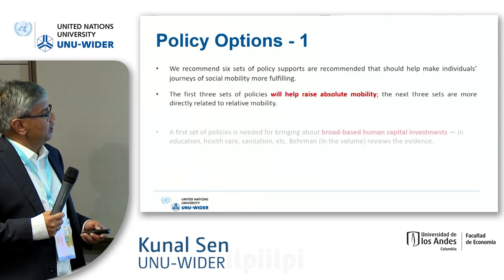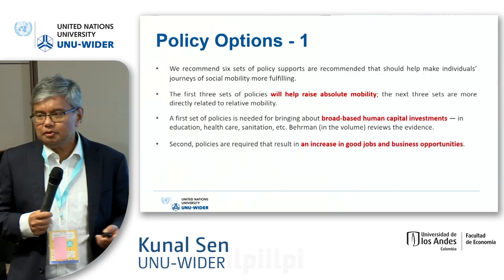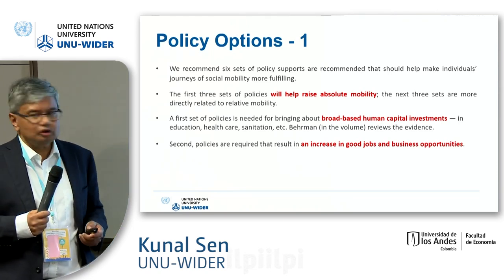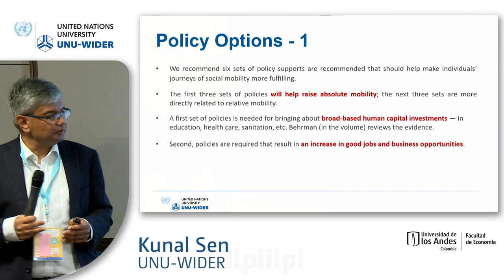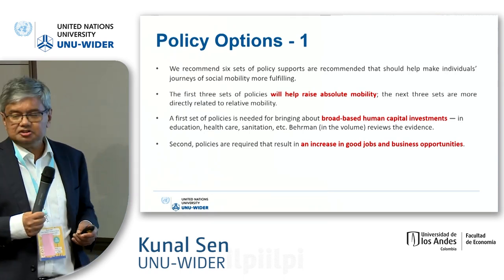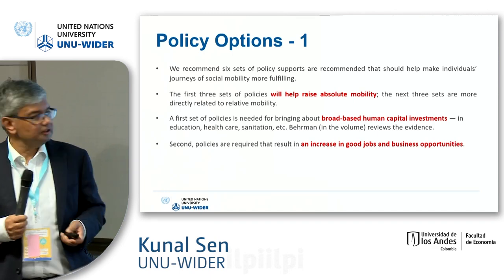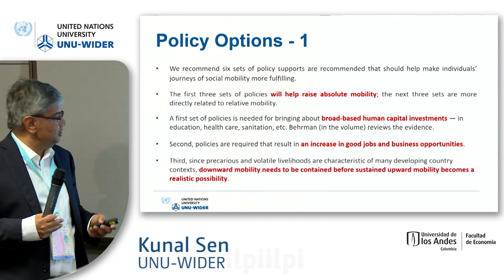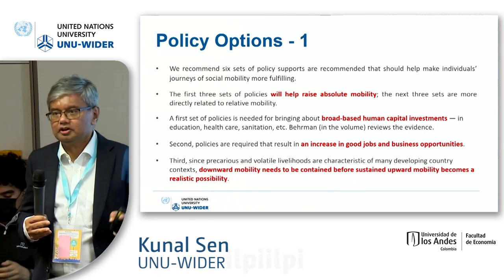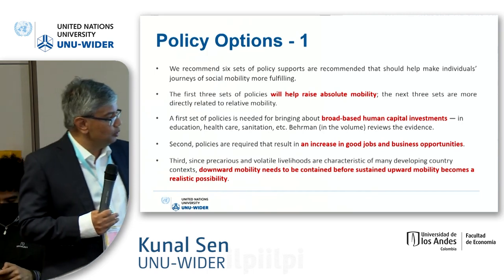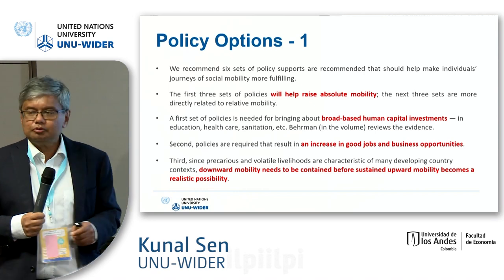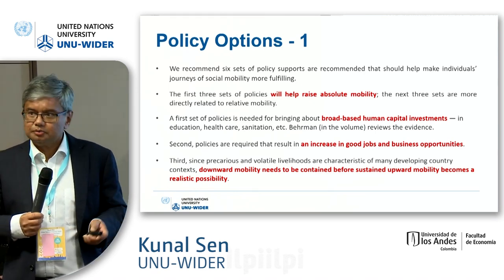On policy, the first few options that came out of the book are fairly standard. We saw a lot of evidence on the importance of broad-based human capital investment, and very clear evidence that we need more good jobs and opportunities for people to move up in occupation and income. We also saw clear evidence that downward mobility is something we should really worry about in a low-income country context — we should focus on containing downward mobility before even thinking about upward mobility.